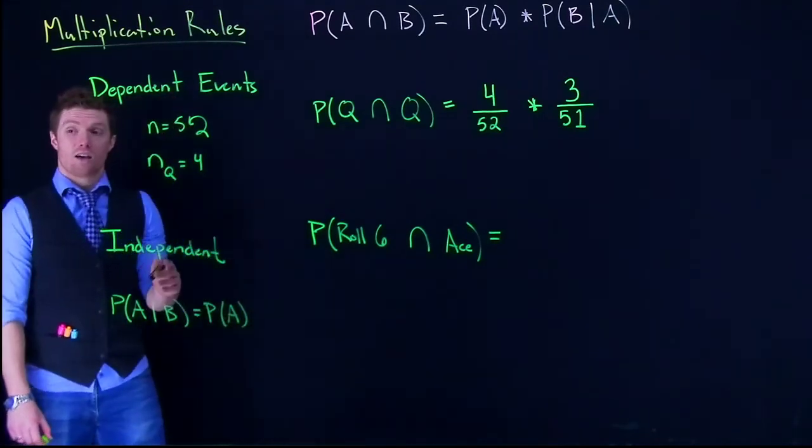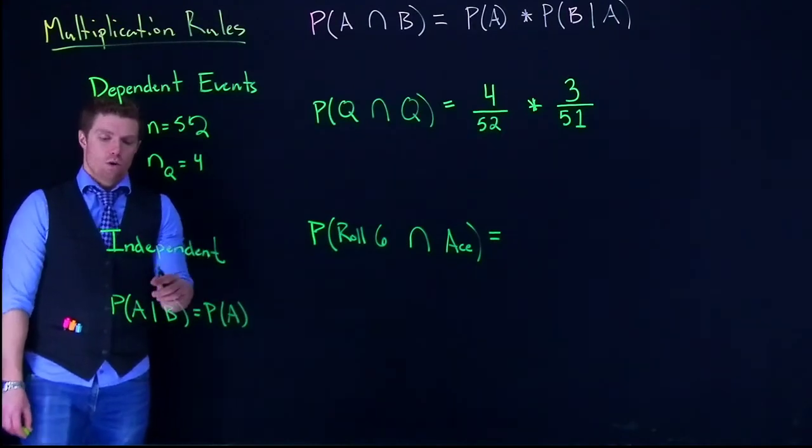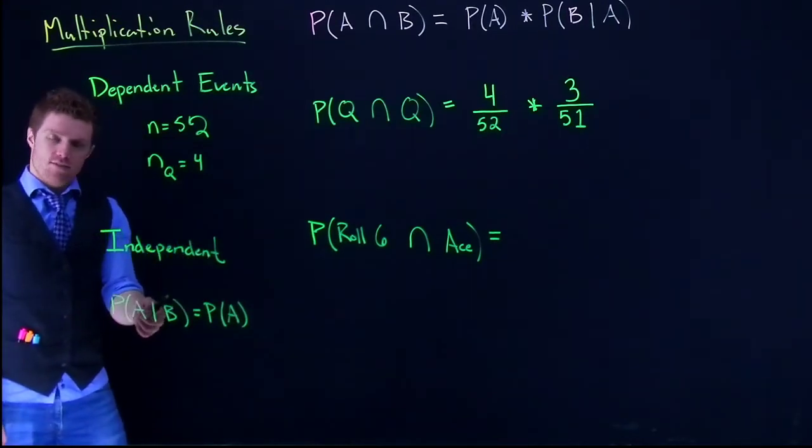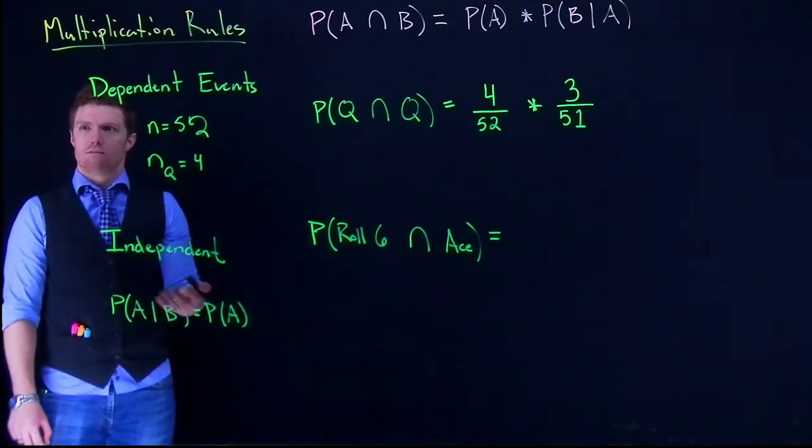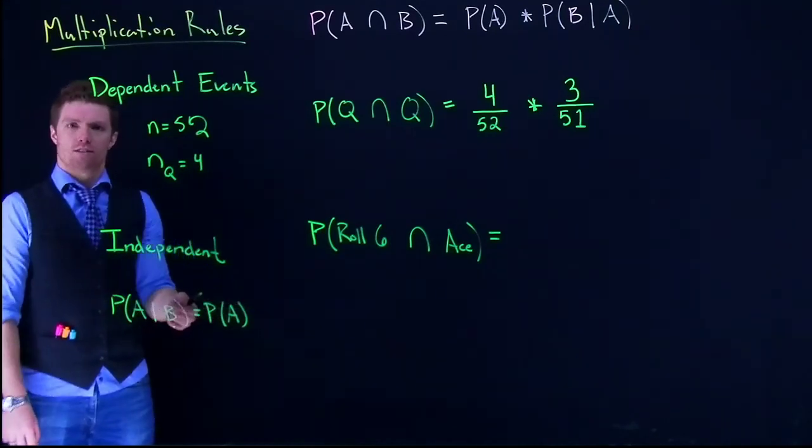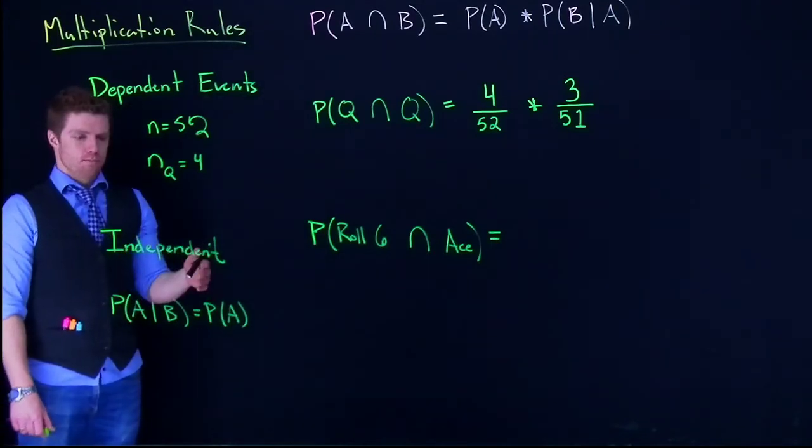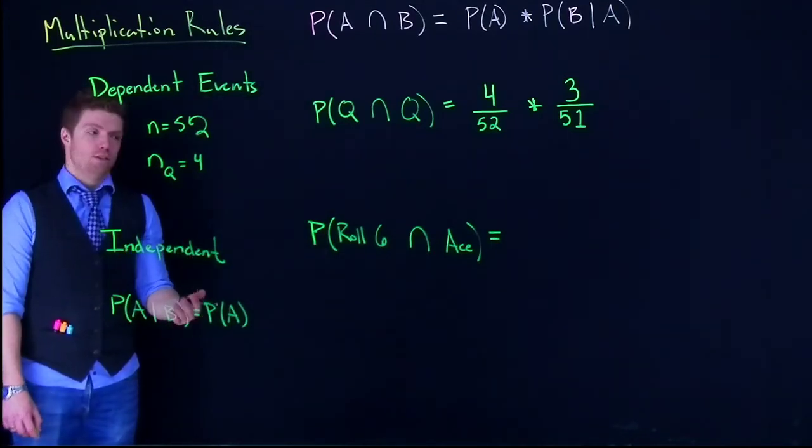So let's think about dice and cards. What's the probability of rolling a 6 given that we have drawn an ace from the deck? Well, it's just the probability of rolling a 6. That ace in the deck has no variance on whether or not we rolled this 6.